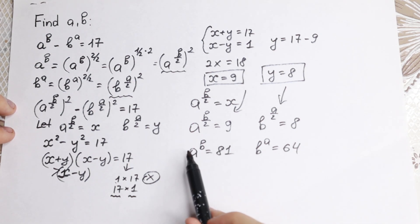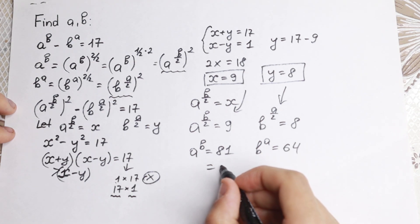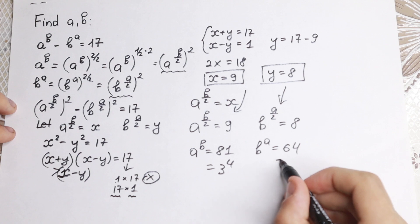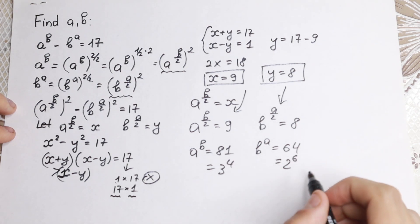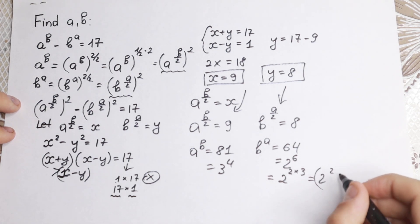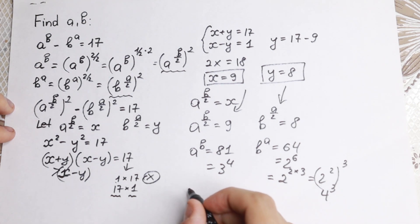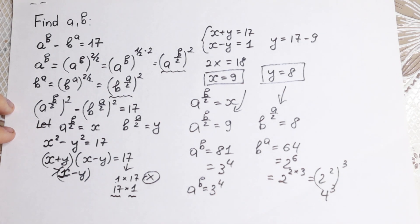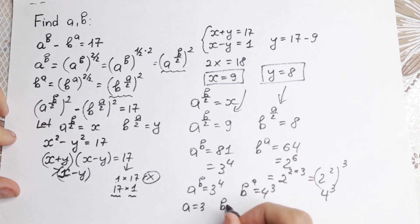We need to find a and b. We note that 81 equals 3 to the fourth power. And 64 can be written as 2 to the sixth power, which we rewrite as 2 squared, raised to the third power — that is, 4 cubed. So we have a to the power b equals 3 to the fourth, and b to the power a equals 4 cubed. The only solution is a equals 3 and b equals 4.